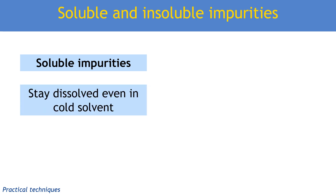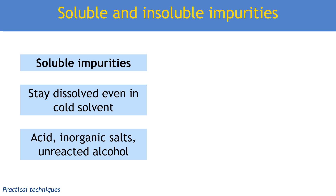Soluble impurities will stay dissolved — we're talking about stuff that dissolves really well in the solvent, let's say water. Even when the solvent is ice cold, they will stay in solution. This could be acid, which is extremely soluble. It could be inorganic salts that are the product — maybe we neutralized the acid and made some salts. We could even have, if we made an ester like aspirin, some unreacted alcohol, and alcohols are relatively soluble because of the OH groups.